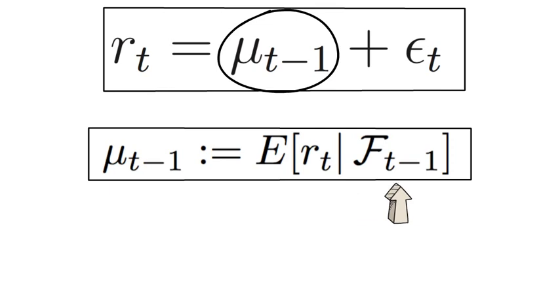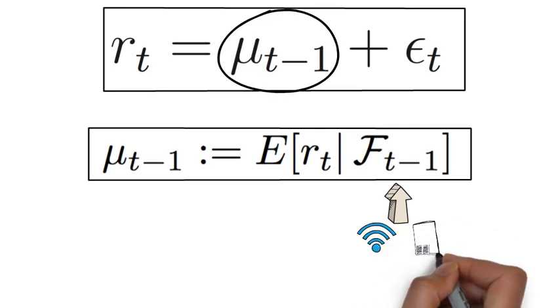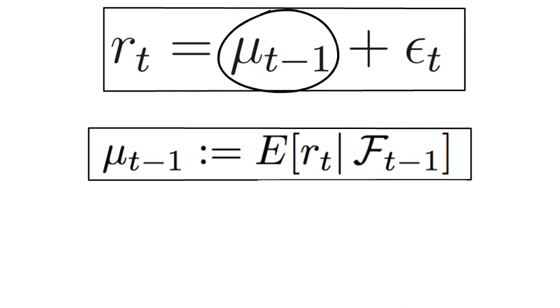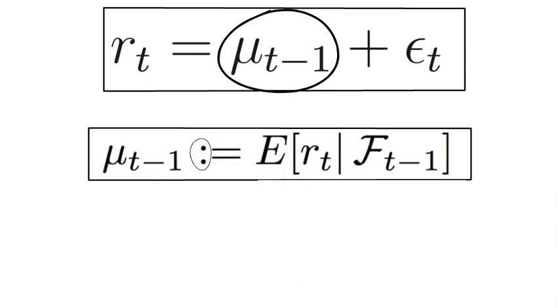That information is abbreviated with F. Simplistically speaking, all information that you can find on the internet or in newspapers as of time t-1 is part of your information set F. And by the way, the two dots in front of the equality sign highlight that that's a definition.